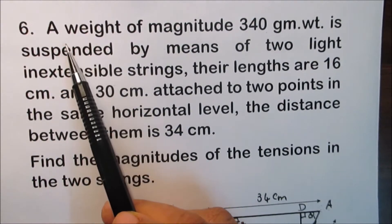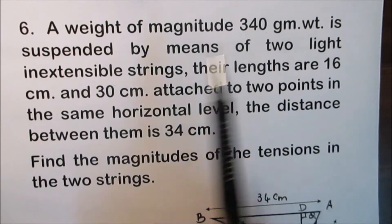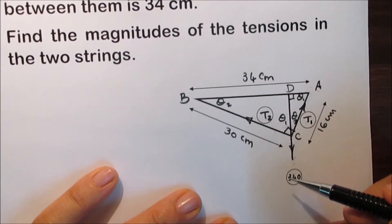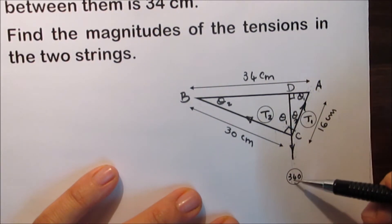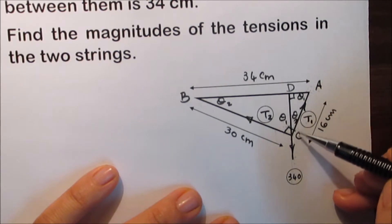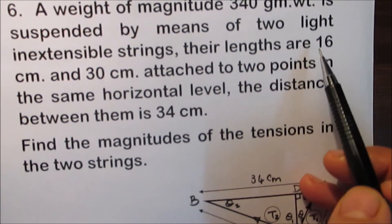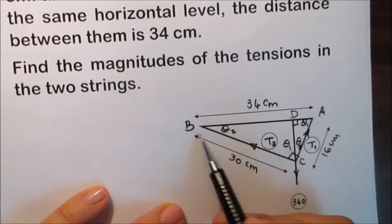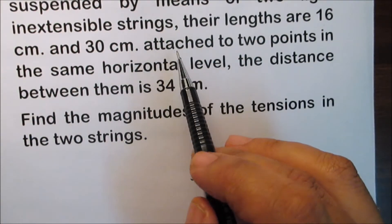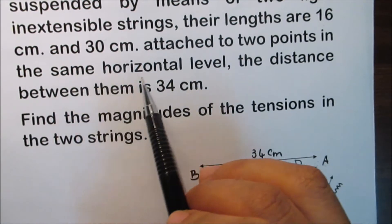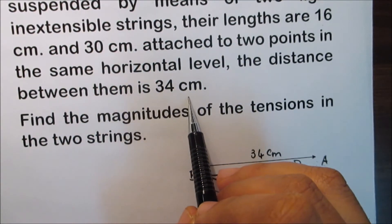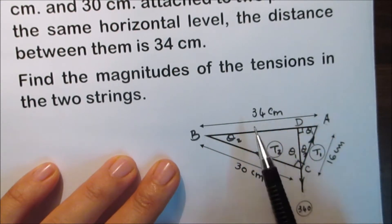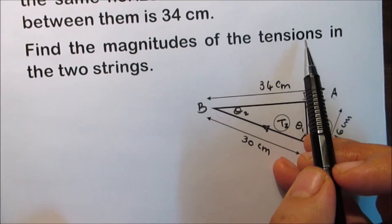Now an important example on Lamy's rule. A weight of magnitude 340 gram-weight is suspended by means of two light and extensible strings. The lengths of the two strings are 16 centimeters and 30 centimeters. The two strings are attached to two points in the same horizontal level, and the distance between them is 34 centimeters. Find the magnitude of the tension in the two strings.